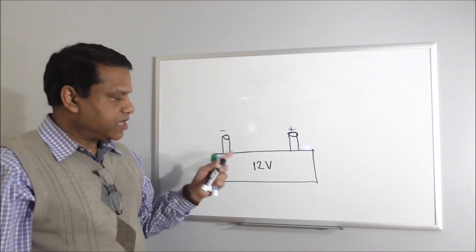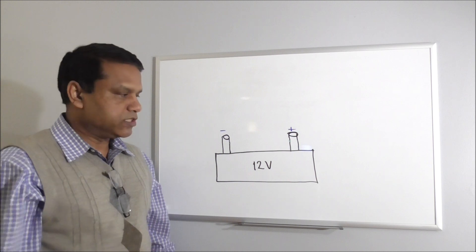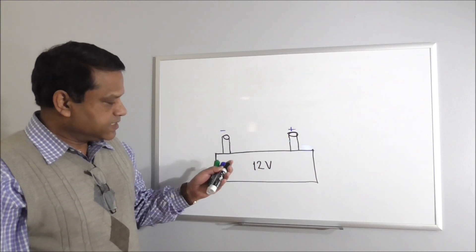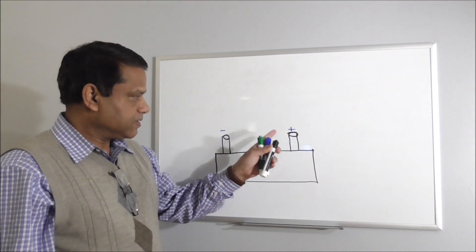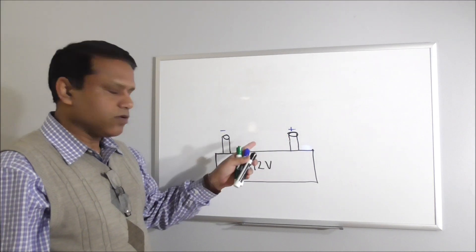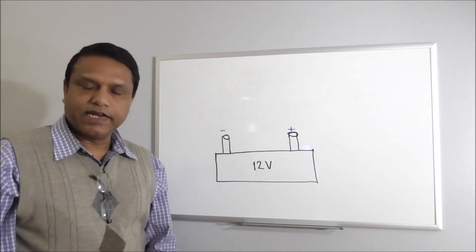Hello, this is Professor Zaman. The function of a battery or voltage source is to create a constant voltage difference. In this case, we have a voltage difference of 12 volts between this terminal of the battery and this terminal - this positive terminal, this is the negative terminal.